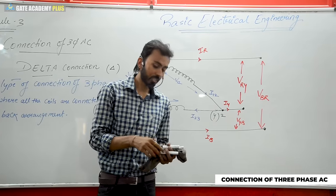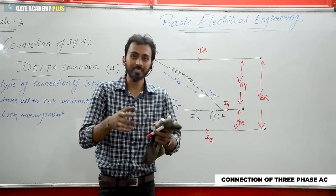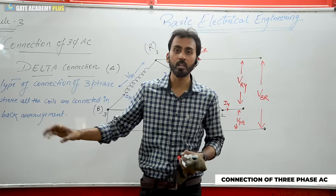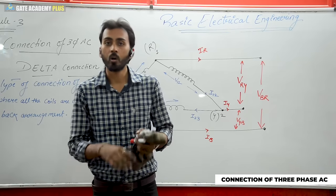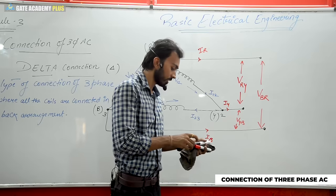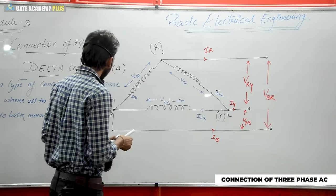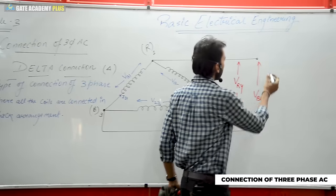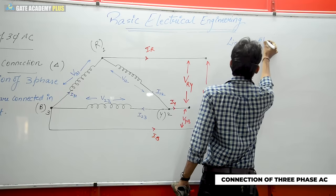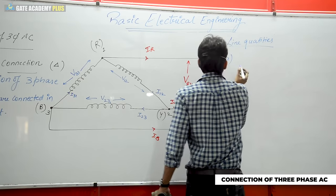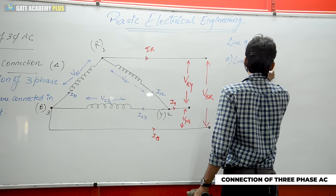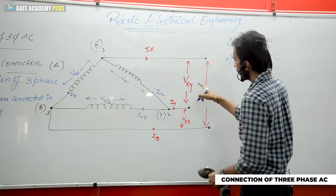Since it is also a balanced system, all the line voltages are going to be equal, all the line currents are going to be equal, all the phase voltages are going to be equal, and all the phase currents are also going to be equal. So if we express the quantities in line and phase, we can write: line voltage VRY equals VYB equals VBR, collectively written as VL.